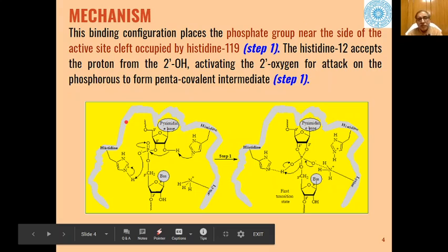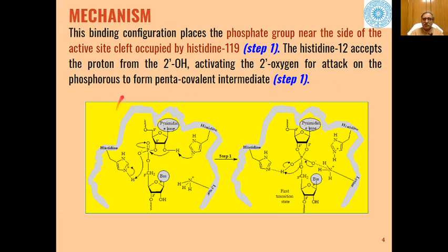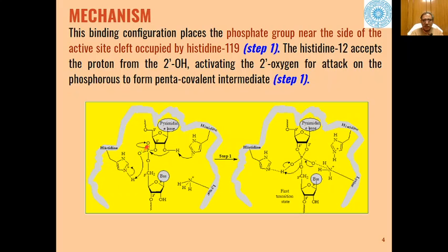Now, the basic mechanism of this reaction is that in the first step, the phosphate group of RNA becomes positioned near histidine-119. This phosphate part of RNA comes closer to histidine-119.